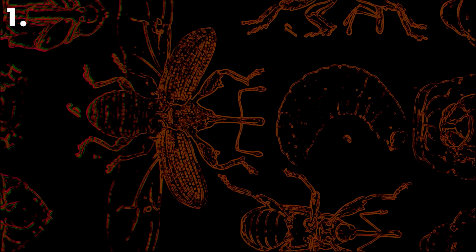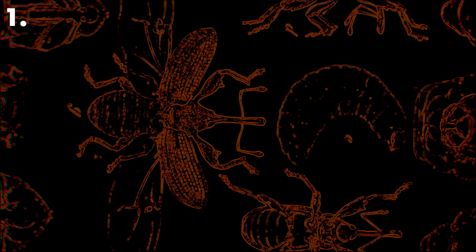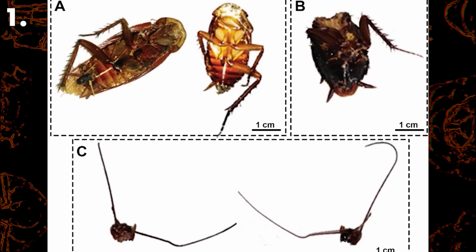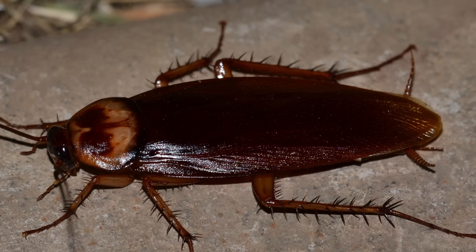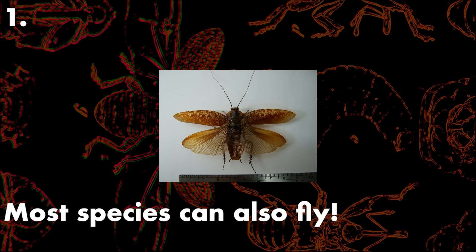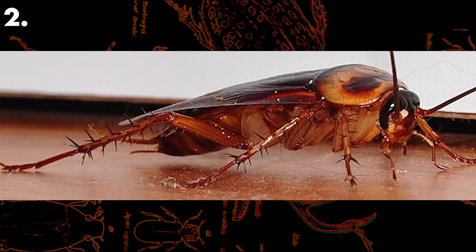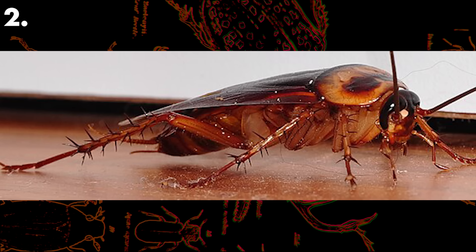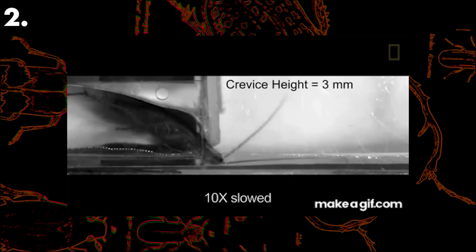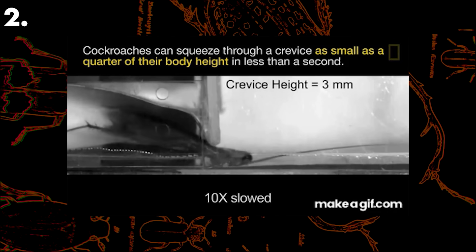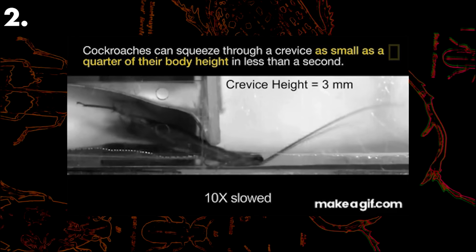First, cockroaches can withstand radiation levels much higher than humans, and they can survive decapitation for weeks and go long periods without food or water. Second, they have a flattened body, which allows them to squeeze into tight spaces, making them difficult to eliminate in homes and natural environments, as they can compress their body to enter tight spaces, sort of like a cat.